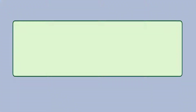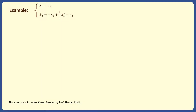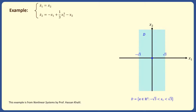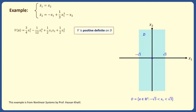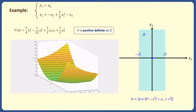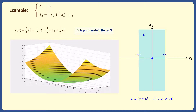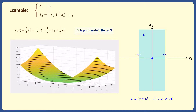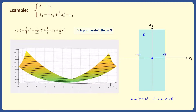Consider this second-order system and note that this system has an equilibrium at the origin. We define a domain d as the set of all x1 and x2 such that x1 is between minus square root of 3 and square root of 3. We then propose a function v which is positive definite on the domain d. This figure shows the values of v for different values of x1 and x2 in the set d. It can be seen that the function is only 0 at the origin and is positive for all other x1 and x2 on the set d.